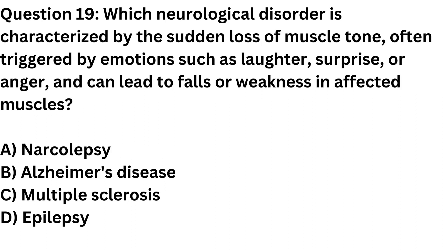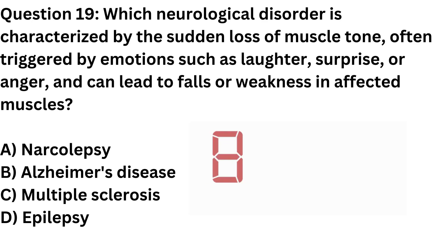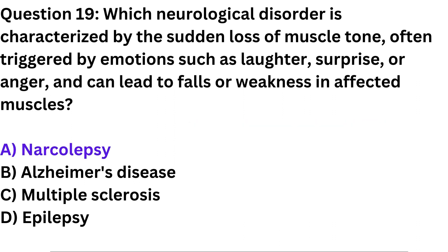Question 19. Which neurological disorder is characterized by the sudden loss of muscle tone, often triggered by emotions such as laughter, surprise, or anger, and can lead to falls or weakness in affected muscles? a. Narcolepsy. b. Alzheimer's disease. c. Multiple sclerosis. d. Epilepsy. Correct answer: a. Narcolepsy.